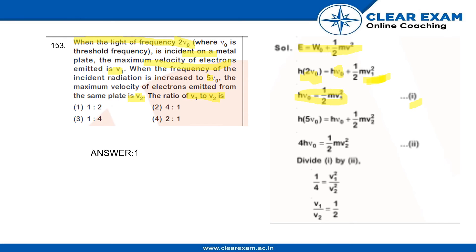Similarly, we will find the equation for 5μ0. So it will be h into 5μ0 equals h μ0 plus half mv2 raised to power 2. Right, so we are getting this as the second equation.